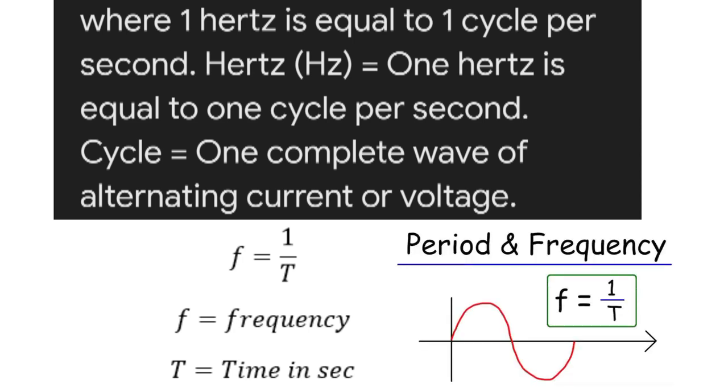Also, one cycle is equal to one complete wave of alternating current or voltage. This is the formula, here you can see in the image. The formula for frequency is f equals one by T. F is the frequency and T is the time period in seconds.